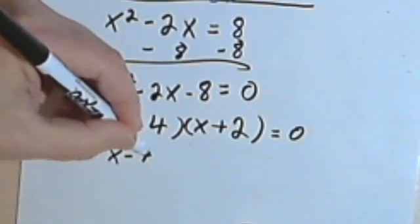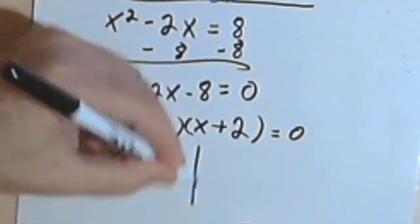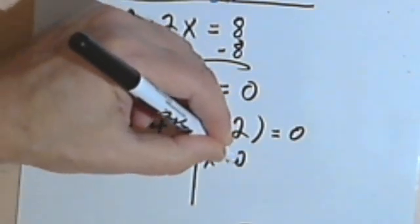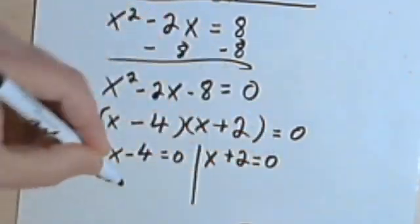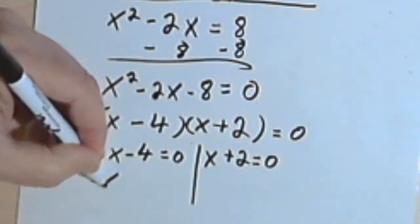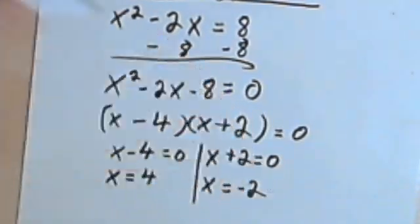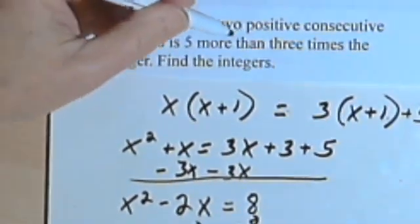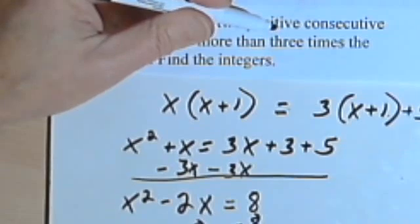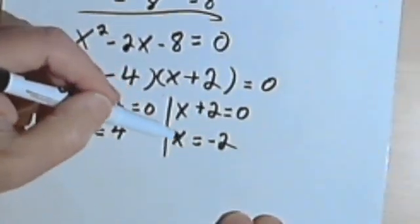I'll set both of these equal to 0. And then I'm gonna find out that x equals 4 or x equals negative 2. Well, going back to the problem, I was asked to find positive consecutive integers. So I can't use that negative 2.